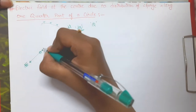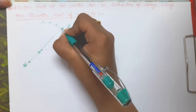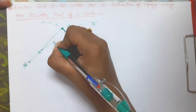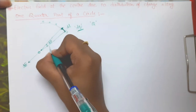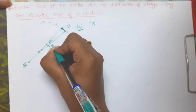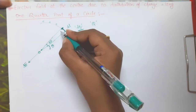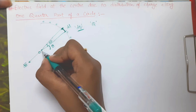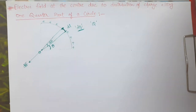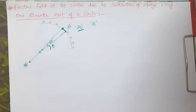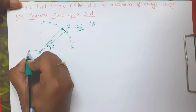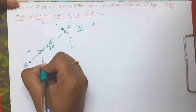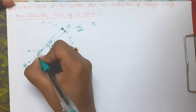This length dl is subtending a small angle dθ from the center, and from the horizontal it is at an angle of theta. Now what we need to do is, as always, we are going to find out the components of this dE. This will be the reference horizontal line and this will be the vertical line.